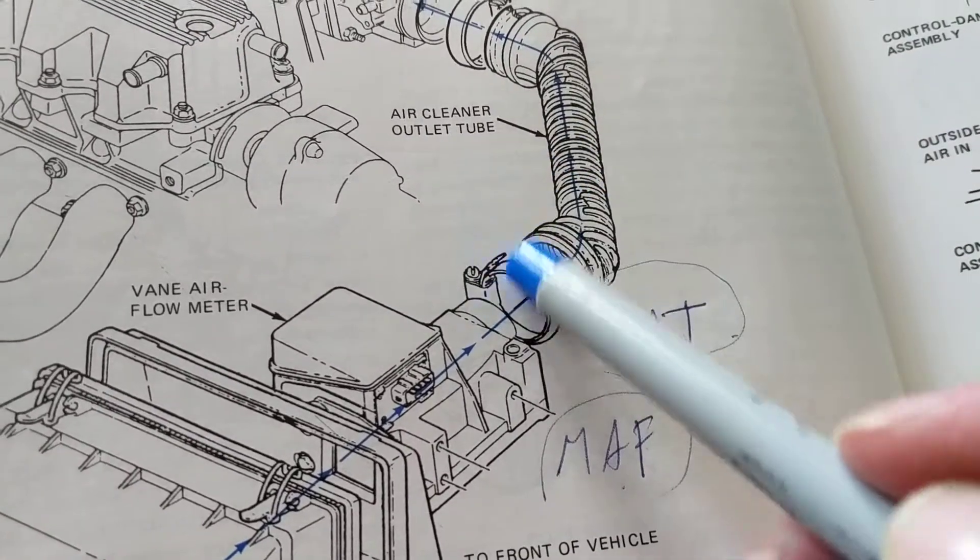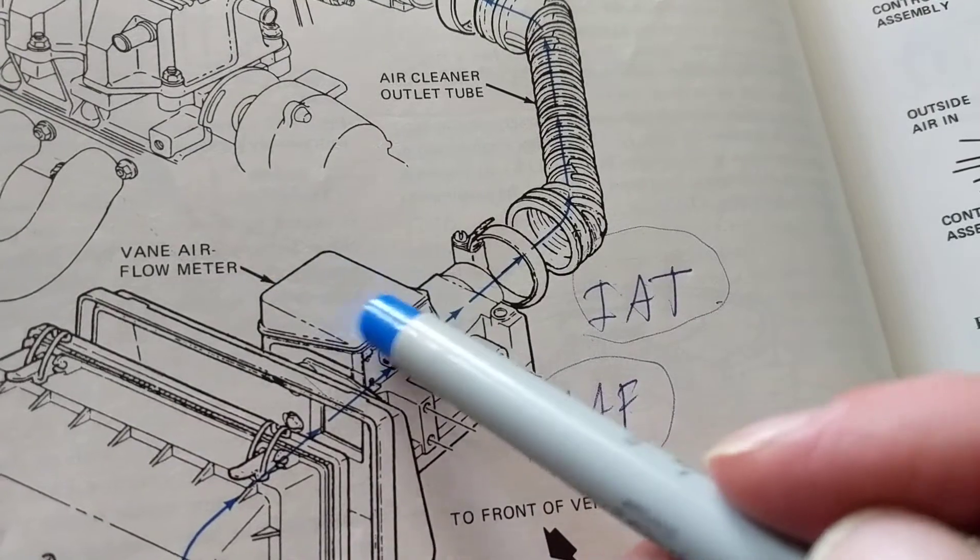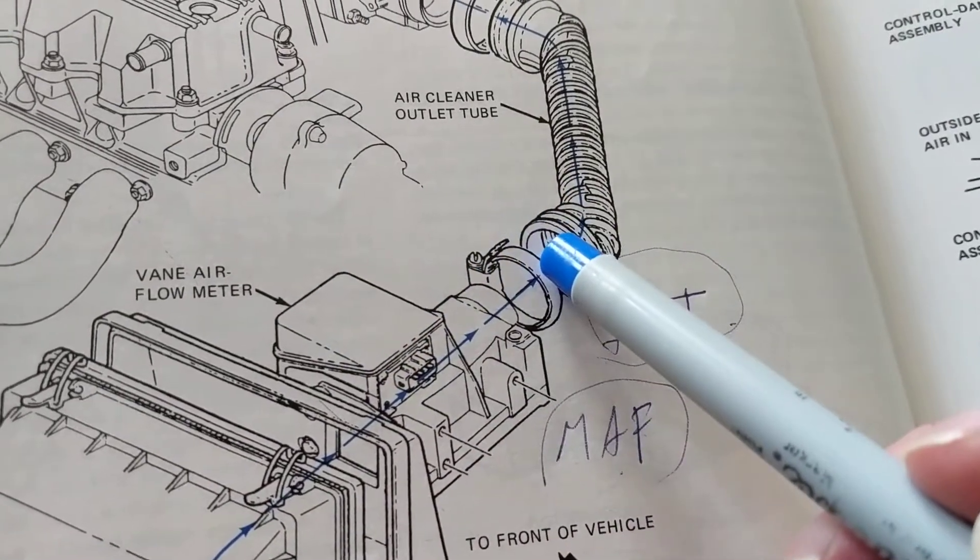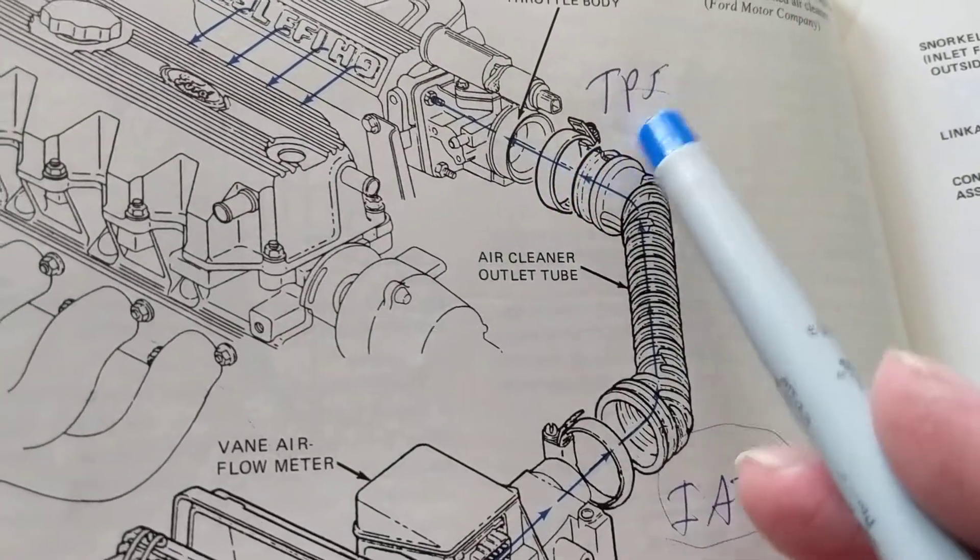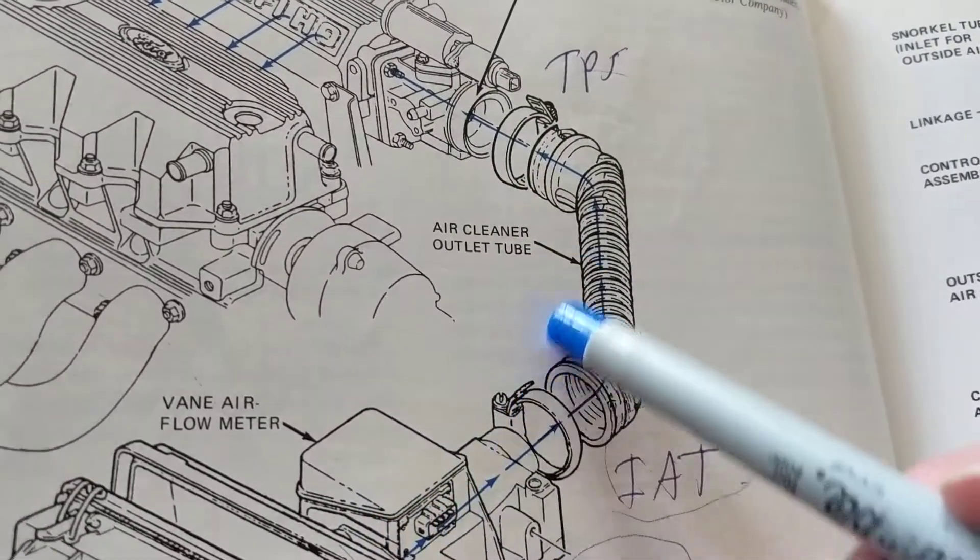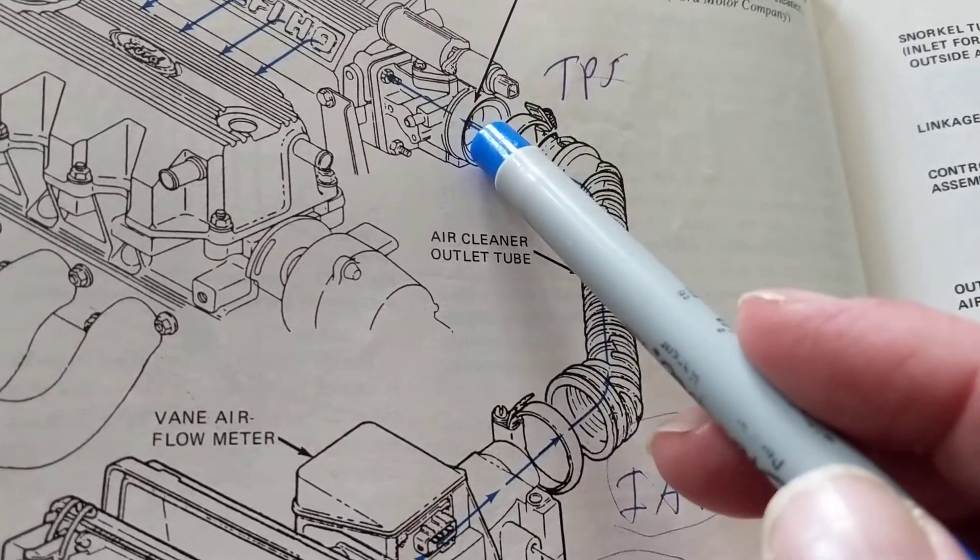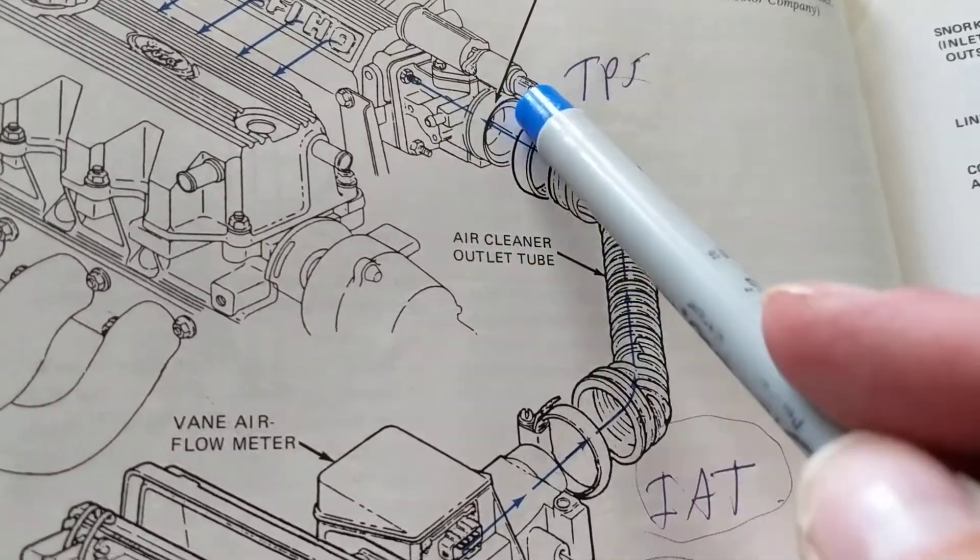This is a vane airflow meter. Today we have a mass airflow sensor, same thing, but anyway you find it over here. Throttle position sensor you'll find on the throttle body which is right over here. When you step on the gas pedal you're opening up this plate in here to allow more air to be sucked in.